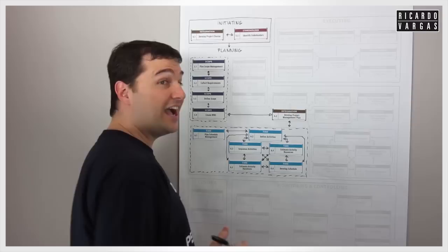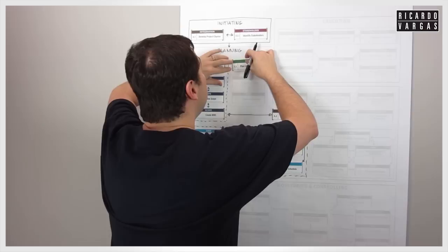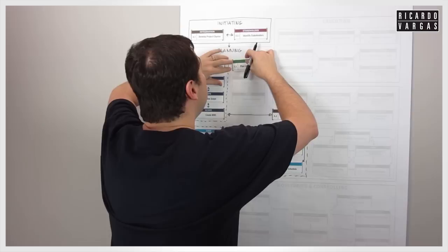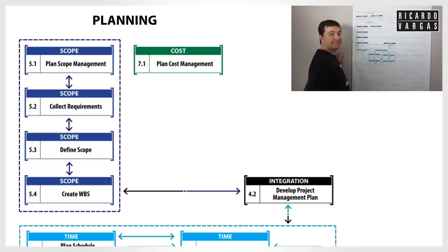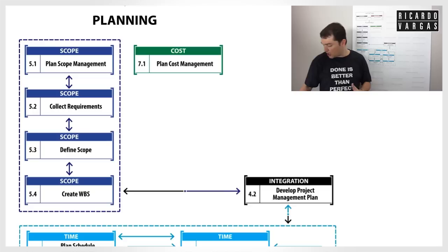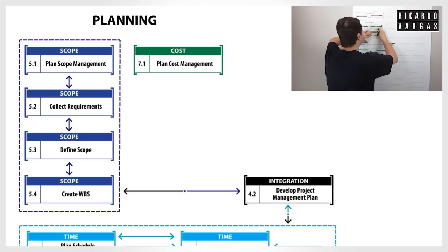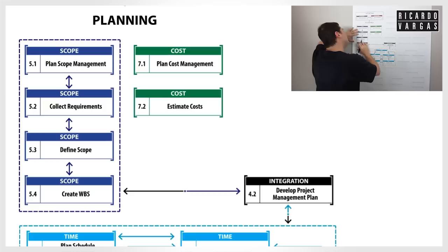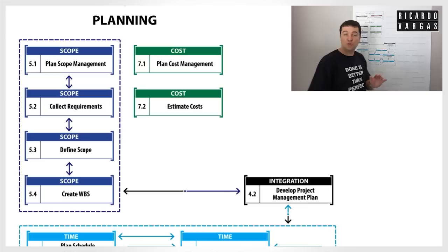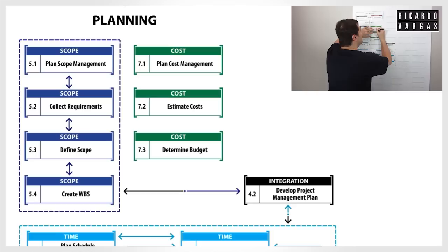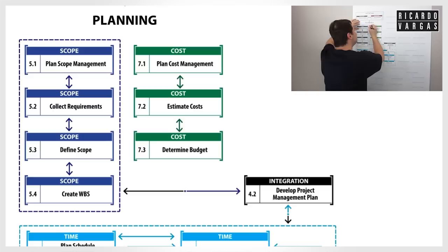After scope and time, I need to frame the cost. I start with plan cost management — take the first word 'plan' and the last word 'management,' then just change the middle: scope, schedule, cost. I create the rules I'll use to manage cost, then I estimate the costs using the scope, the activities, and the resources. After that, I create the budget. All of this is completely connected and frames the cost of my project, connected back to integration.